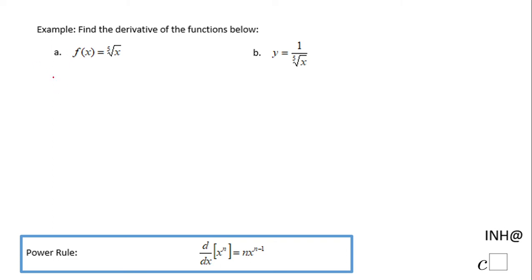Welcome or welcome back to INeedHelp@Csquare. In this example we need to find the derivative of these two functions. I'm gonna start with Part A which says f of x equals fifth root of x.